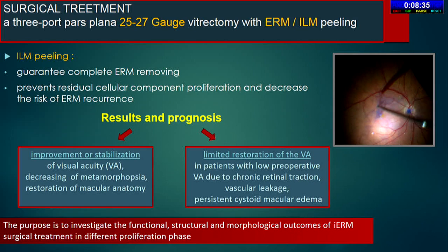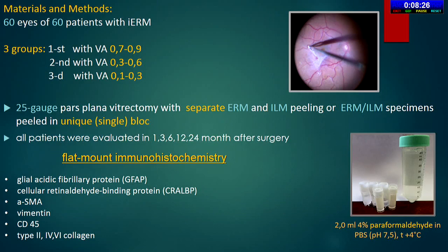The purpose of this study is to investigate the functional, structural, and morphological outcomes of IRM surgical treatment in different proliferation phases. Sixty patients who underwent 25-gauge pars plana vitrectomy were evaluated at 1, 3, 6, 12, and 24 months after surgery, and all patients were divided into three groups depending on visual acuity. The study also evaluates flat-mounted IRM surgical specimens for evidence of the presence of different cell types throughout respective differentiations.